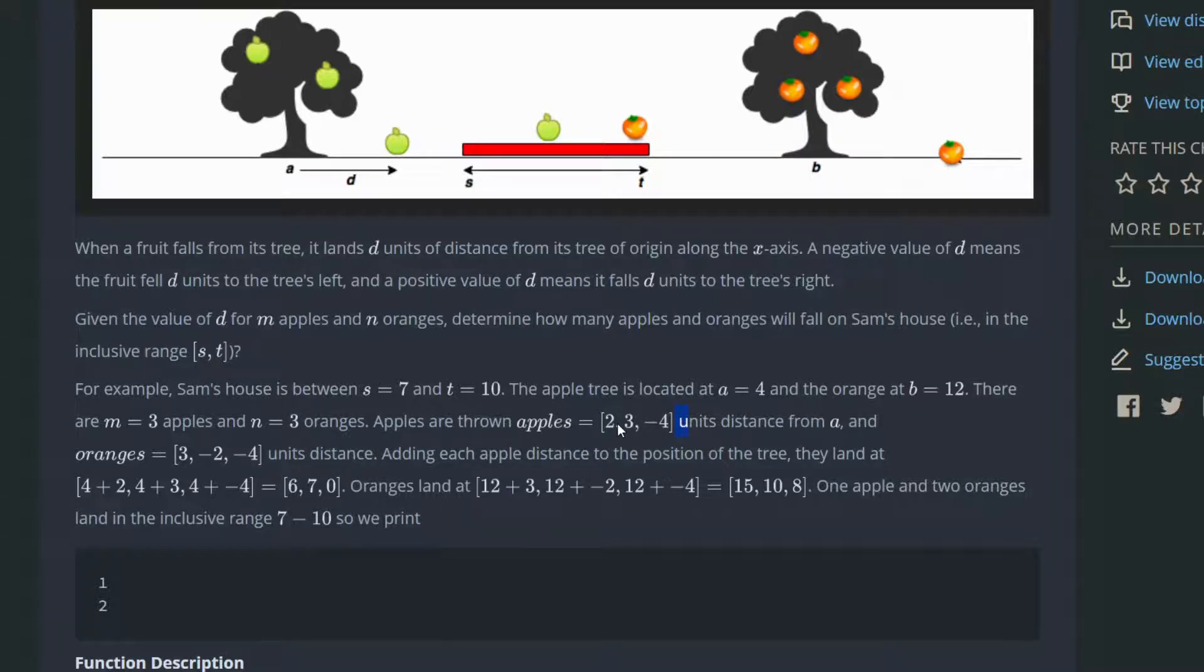The first one is two steps, it's positive so to the right. The second one is three steps to the right. The third one is four steps to the left since it's negative. The question says after each fruit drops, find out how many apple fruits are located in Sam's house and how many orange fruits are also located in Sam's house.